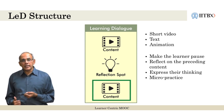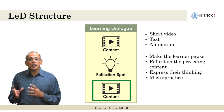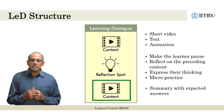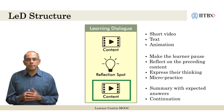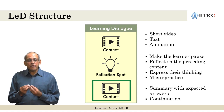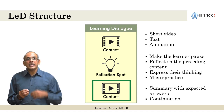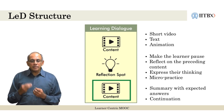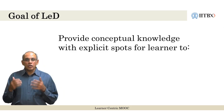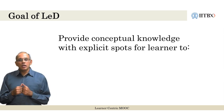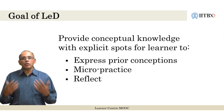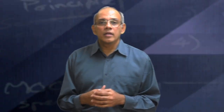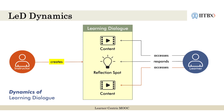A reflection spot is followed by content. This content may be a summary of the expected answers in the reflection spot or it may continue further from the reflection spot. The key idea is to have the reflection spot question connected to the content immediately preceding it as well as to the content immediately following it. The goal of a learning dialogue is to provide conceptual knowledge along with explicit spots for learners to express their conceptions, do micro-practice, and reflect on what they have learnt. The instructor does this by creating a learning dialogue with content and reflection spots that are related to each other.